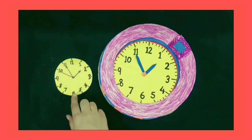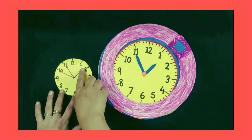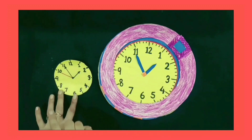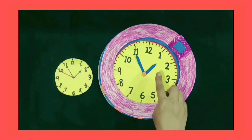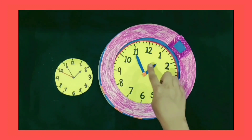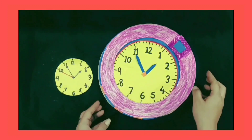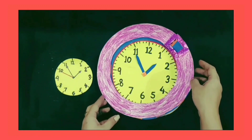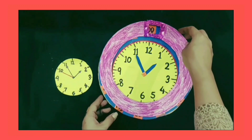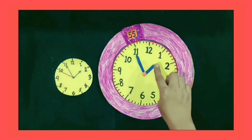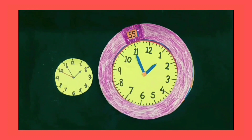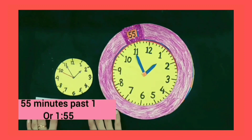Now we discuss another part. Students, in this clock, the hour hand is on number 1 and the minute hand is on number 11. The time is 55 minutes past 1. We write it as 1:55 or 55 minutes past 1.